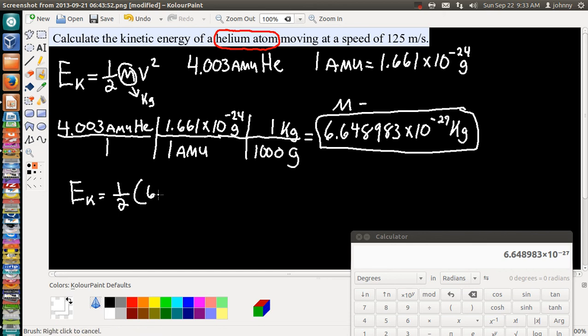The kinetic energy, EK, is equal to one-half times the mass, which is 6.648983 times 10 to the negative 27 kilograms. If you're wondering why I didn't round that just yet, I'm not ready to get my final answer, so I keep all my sig figs until the end. Times—open parentheses—the velocity they said was 125 meters per second squared.